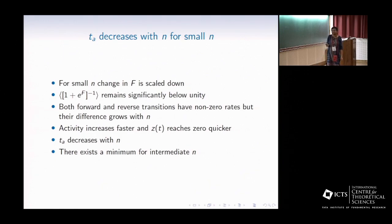For small n, on the other hand, t* decreases with n, because for small n, no such transition remains blocked, and both forward and reverse transitions are possible, but the transition rates are now a function of n. The difference between these two rates increases with n. As a result, activity increases faster, and z(t) reaches zero quicker. So t* decreases with n.